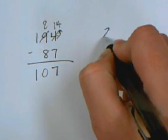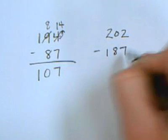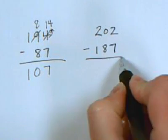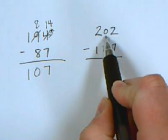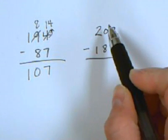For example, if I have this problem 202 minus 187, in this problem when they go to the tens place to borrow there's nothing there and that's when they get confused.